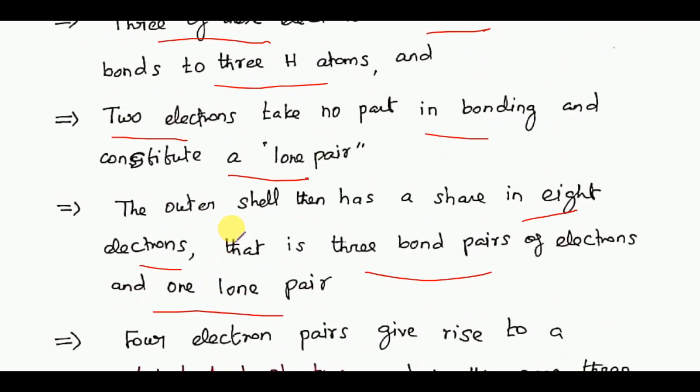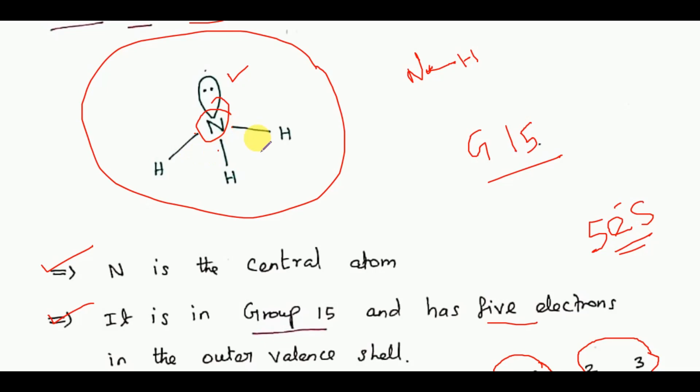How will they ask the question? In the ammonia molecule, the outer shell has a share in eight electrons. How many bond pairs of electrons? How many lone pairs of electrons? Look at this: one, two, three bond pairs and one lone pair. So the answer is three bond pairs and one lone pair present in the ammonia molecule.